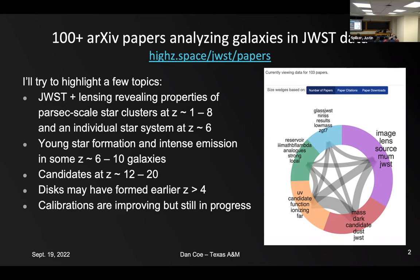Some of the things I'll be talking about: gravitational lensing is something I've worked on a lot. When you combine the power of JWST plus gravitational lensing, we're now seeing the smallest structures we've ever been able to see — really tiny star clusters, just parsecs across, the size of star-forming regions within our own galaxy. We can now see the distant universe and learn all these things, and we've even discovered an individual star in the distant universe.